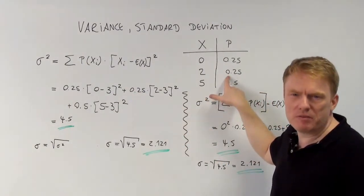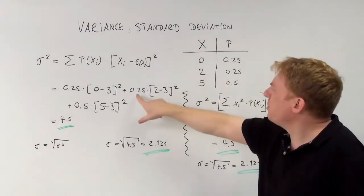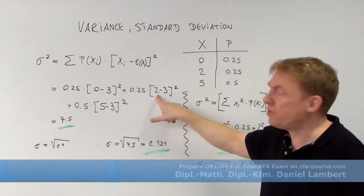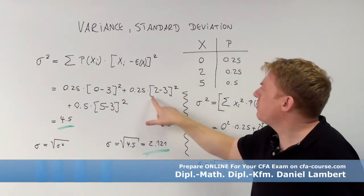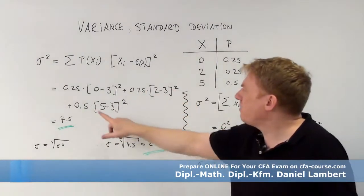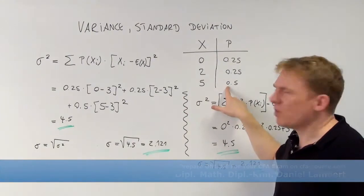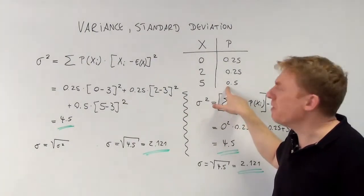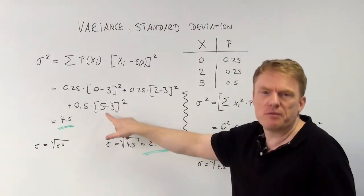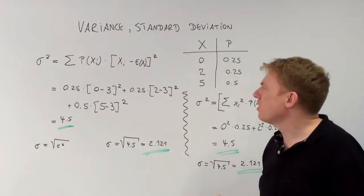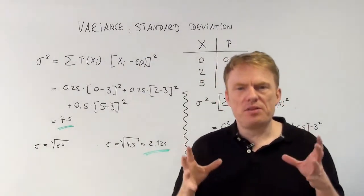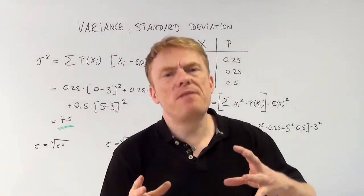Now the second value: the probability of the second value is 0.25, times the difference between the second value 2 and the expected value — so (2 − 3) squared. Then the third one: probability 0.5, times the square of the difference (5 − 3). All in all, this equals 4.5. This is the variance of the random variable.